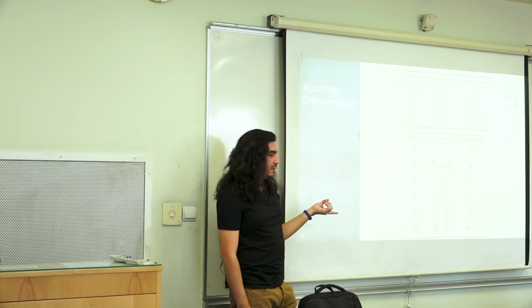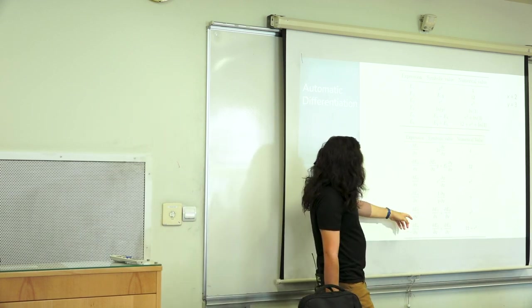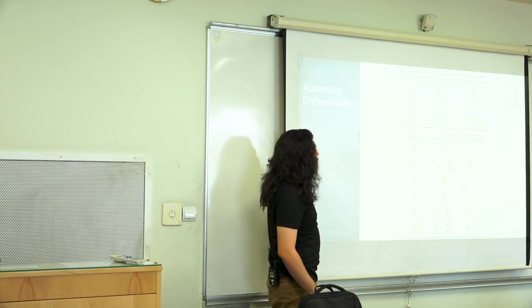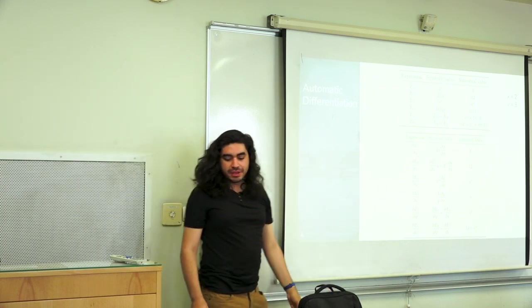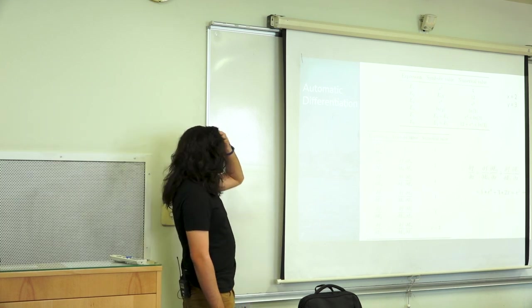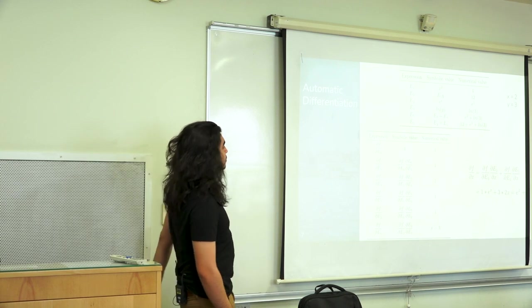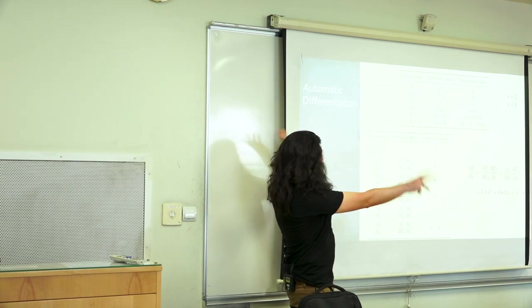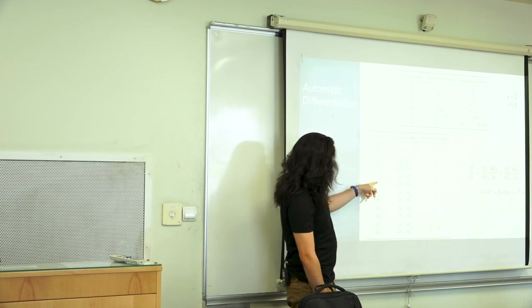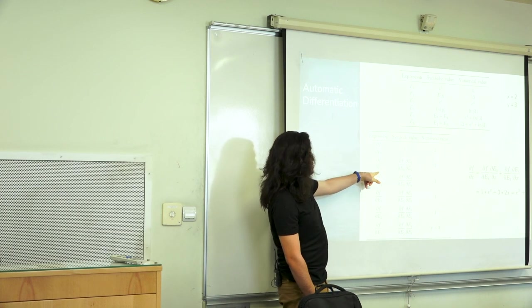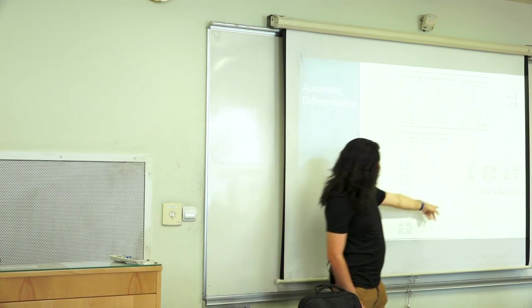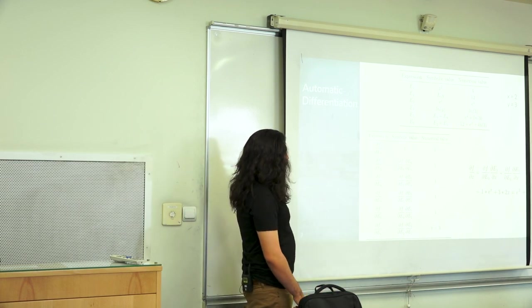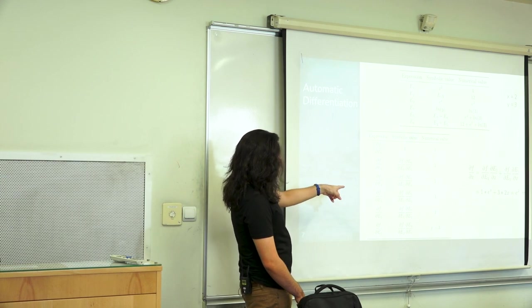This is called forward automatic differentiation because you start from e1 and go to e6 — you follow the natural order. But there is another possibility called backward automatic differentiation. In backward AD, you start by looking at the derivative of f, the whole expression, and go back through e6, e5, e4, e2, e1, and then with respect to x or y. This is usually much simpler for machines because many of the intermediate values are ones.